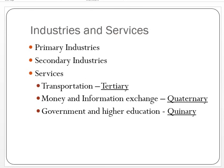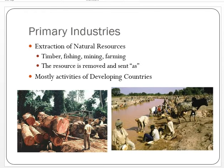When we talk about economics and the economy, we have to think about the activities that people are doing. We tend to talk about economic sectors as primary, secondary, and then service sectors. Historically, service sectors can be subdivided into tertiary, quaternary, and quinary — covering ideas like transportation and money. Let's look at primary industries first.